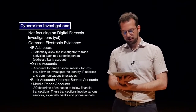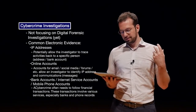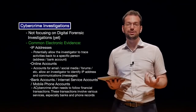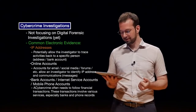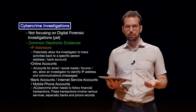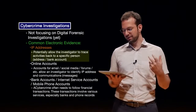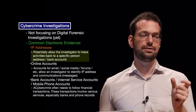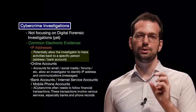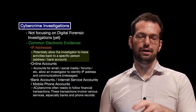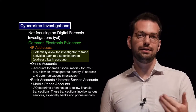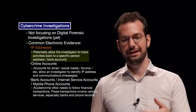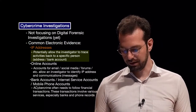Looking at electronic evidence in cybercrime investigations, probably the most common type are IP addresses — internet protocol addresses. IP addresses potentially allow the investigator to trace activities back to a specific person, address, or bank account. If we have an IP address, that's the starting point for location. Once we know location, we may find account information, which may lead us to the actual person behind that account. We don't necessarily know if that person committed the crime, but they're likely related somehow.